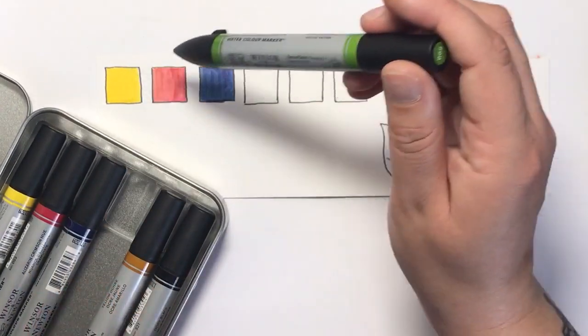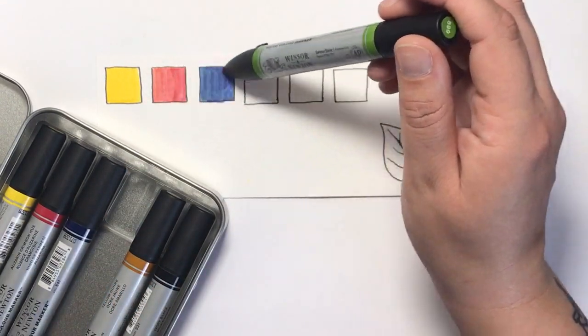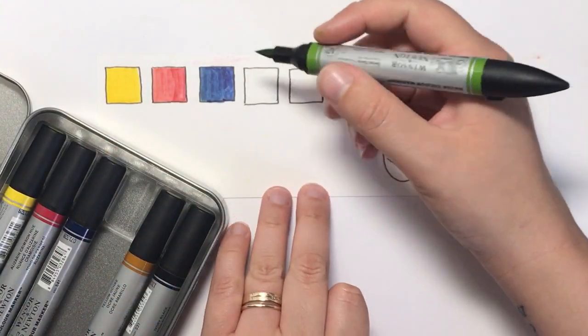We have cadmium yellow, alizarin crimson, and Prussian blue.